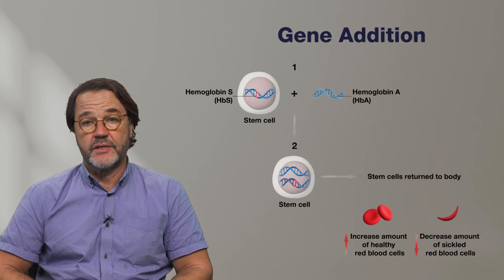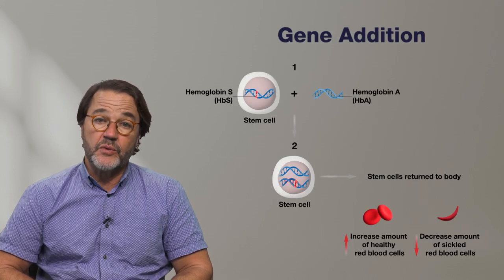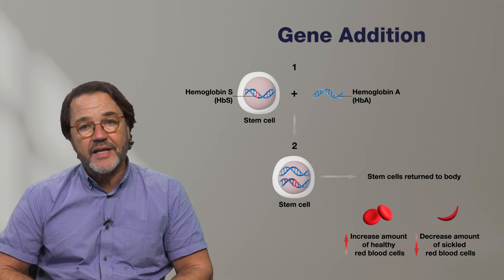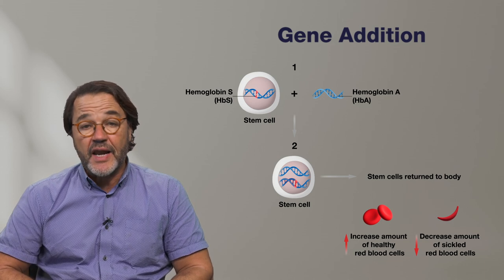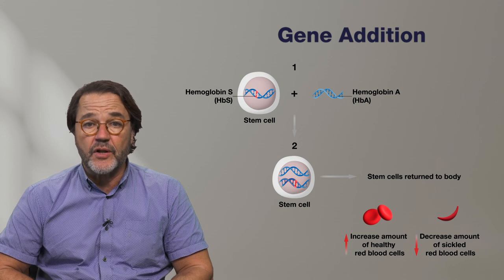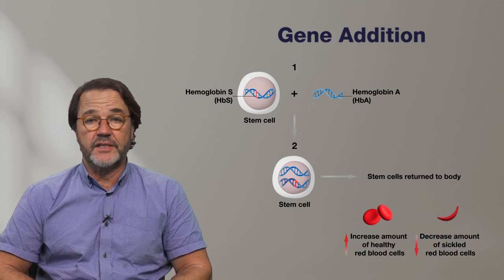In one type of gene therapy called gene addition, an extra copy of a hemoglobin gene without the variant is added to the blood-forming stem cells, which then allows these cells to produce hemoglobin A, a non-sickling hemoglobin.